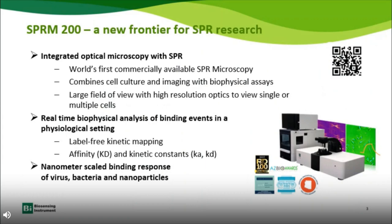SPRM is a label-free technique that allows you to directly culture a cell onto the SPR chip surface, so you can study the binding kinetics with membrane proteins directly on the cell surface, close to their physiological conditions. It can provide real-time analysis and give you binding parameters including the association and dissociation rate constants and the binding affinity. It can also be used to study nanostructures and nanoparticles including species like viruses, bacteria, and so on.